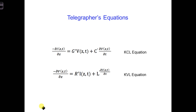To simplify things at first, let's assume the signal loss along this wire is so small that we can approximate the wires as being lossless. How do the telegrapher's equations simplify if the transmission lines are lossless?